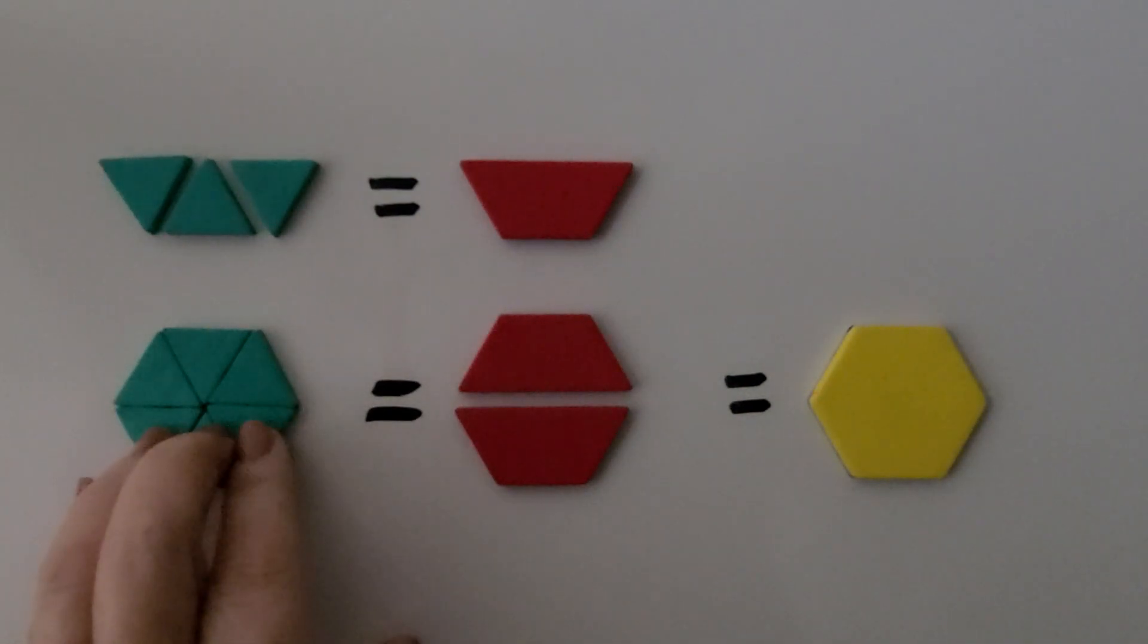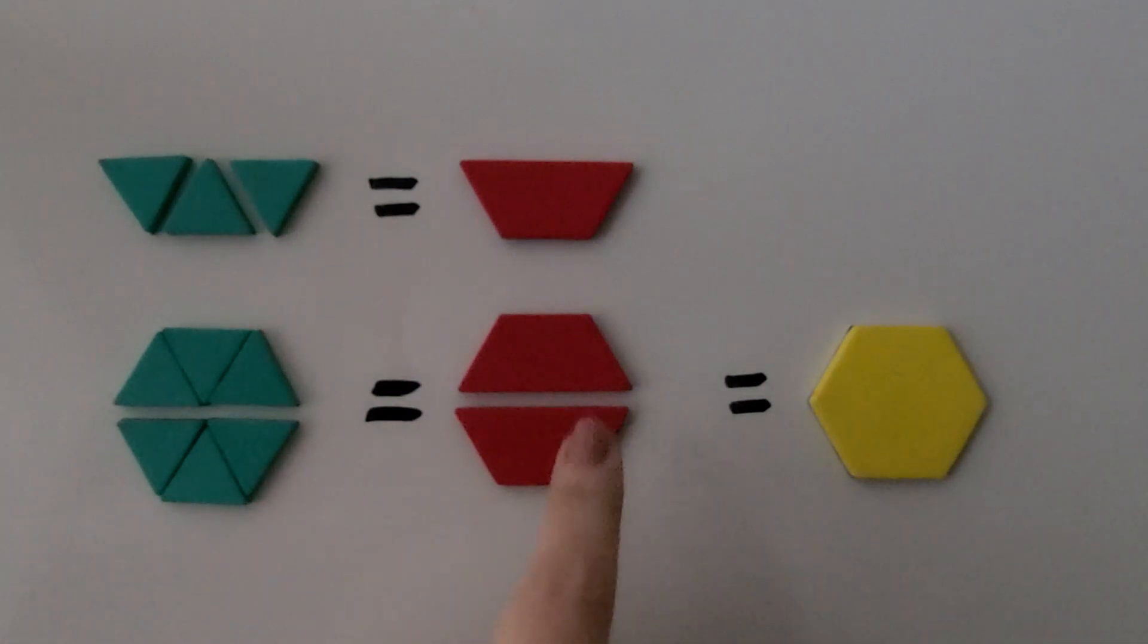See? Put six of them together, we make two trapezoids. And two trapezoids will make a hexagon. We can join smaller shapes together to make larger shapes.